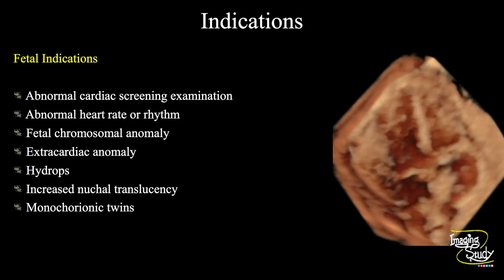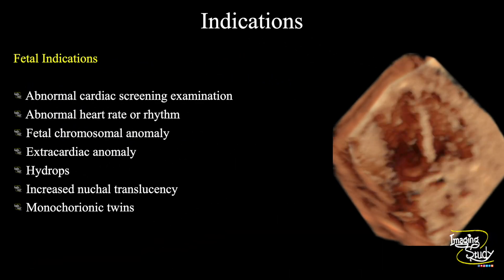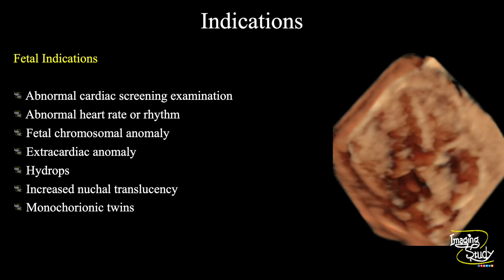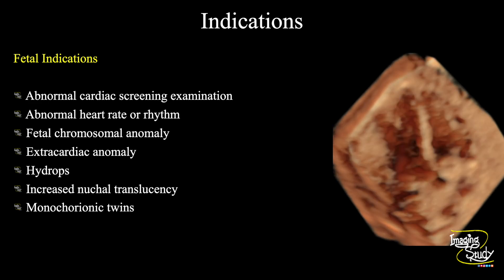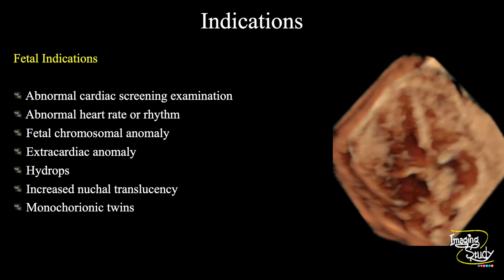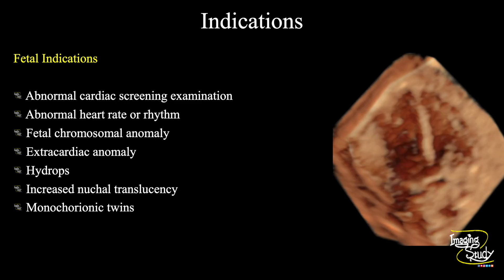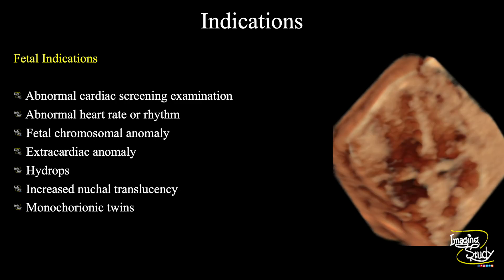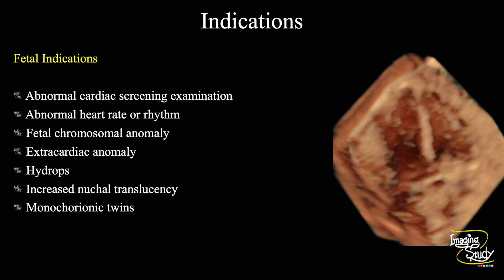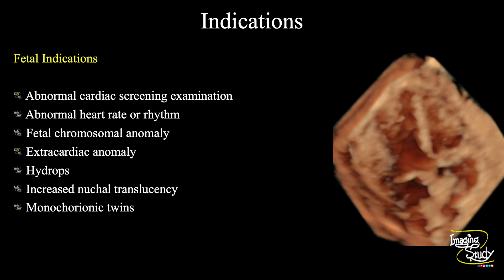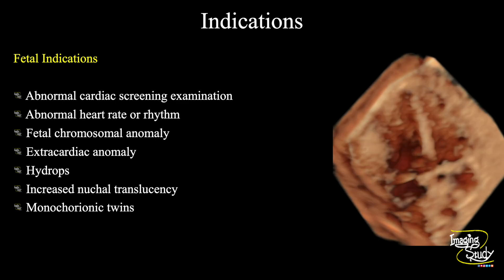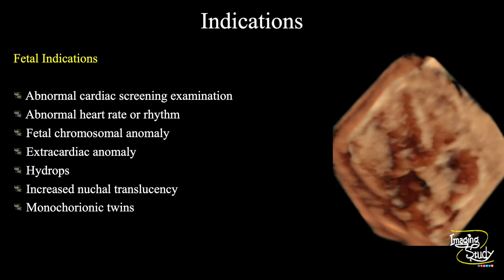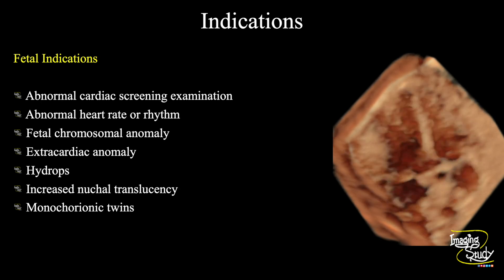If you talk about the indications, we divide them into two parts: fetal indications and maternal indications. The most common fetal indication is abnormal cardiac screening at the second trimester anomaly scan. You may get an abnormal heart rate like bradycardia or tachycardia, or maybe any irregular beats — you send the patient for a fetal echocardiography.